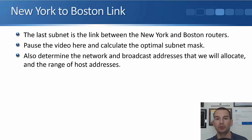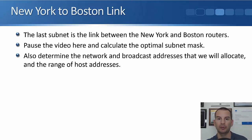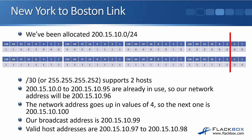So that last subnet — the link between the New York and Boston routers. Pause the video and determine the optimal subnet mask, network and broadcast addresses, and the host addresses. We want to support two hosts. A slash 31 and a slash 30 both support two hosts, but unless the exam explicitly tells you otherwise, go with a slash 30 because that's the standard — it complies with all of the internet standards. So we're going to use a slash 30 here for our two hosts.